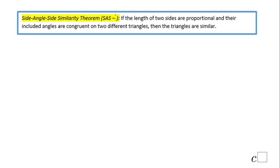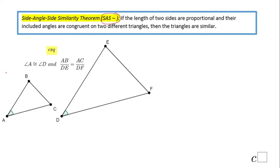The last way to prove that two triangles are similar is what we call Side-Angle-Side similarity — SAS for short. If the lengths of two sides are proportional and the included angle is congruent on two different triangles, then the triangles are similar. You can see the statement here: two pairs of sides that are proportional — AB and DE, AC and DF — and the included angles A and D are congruent.